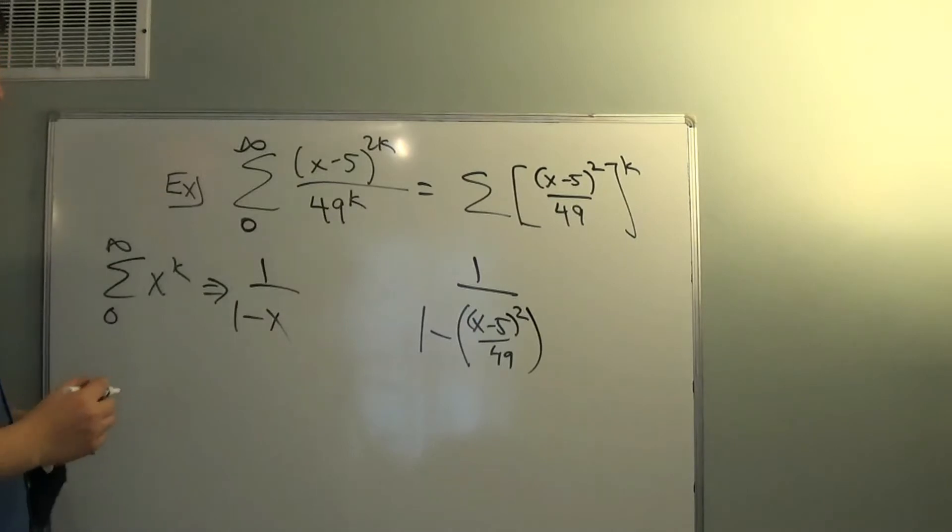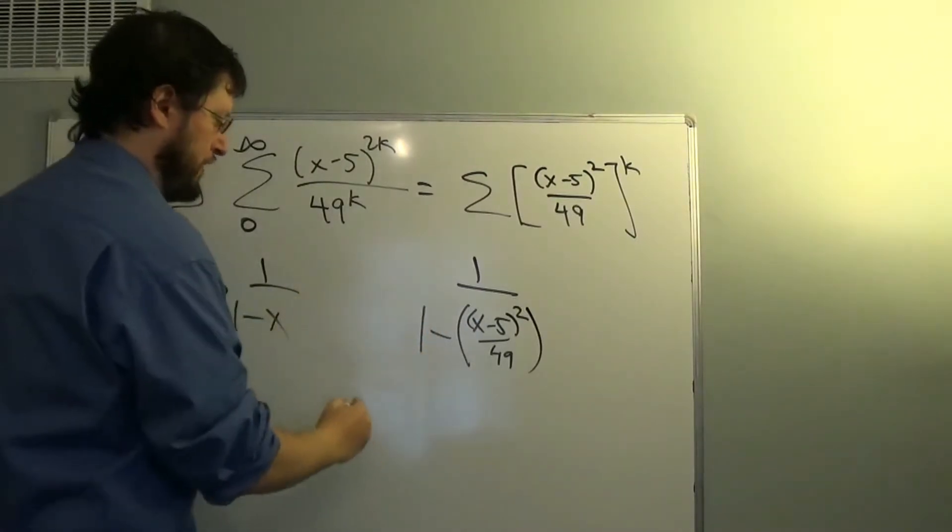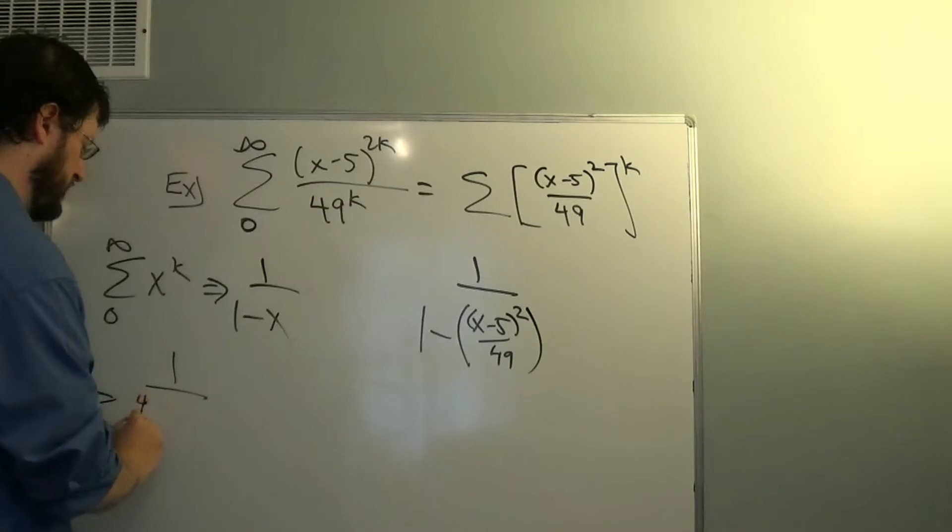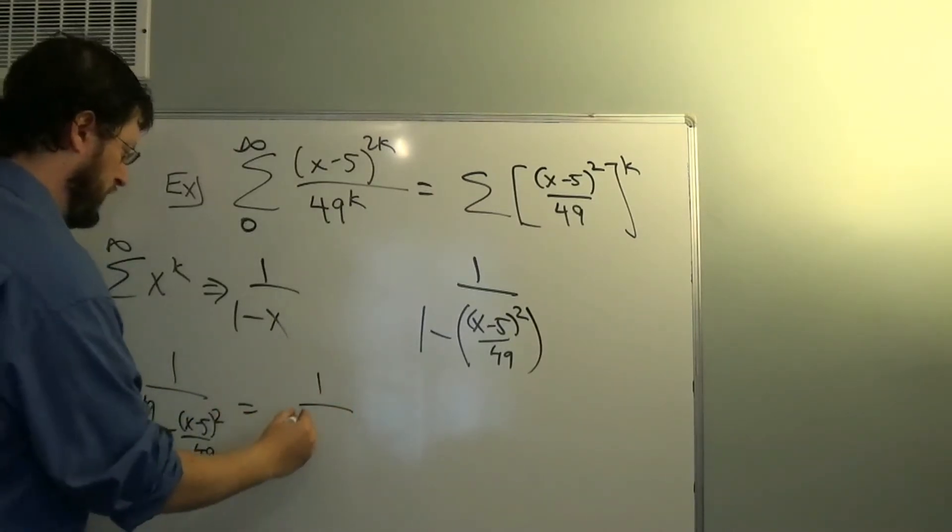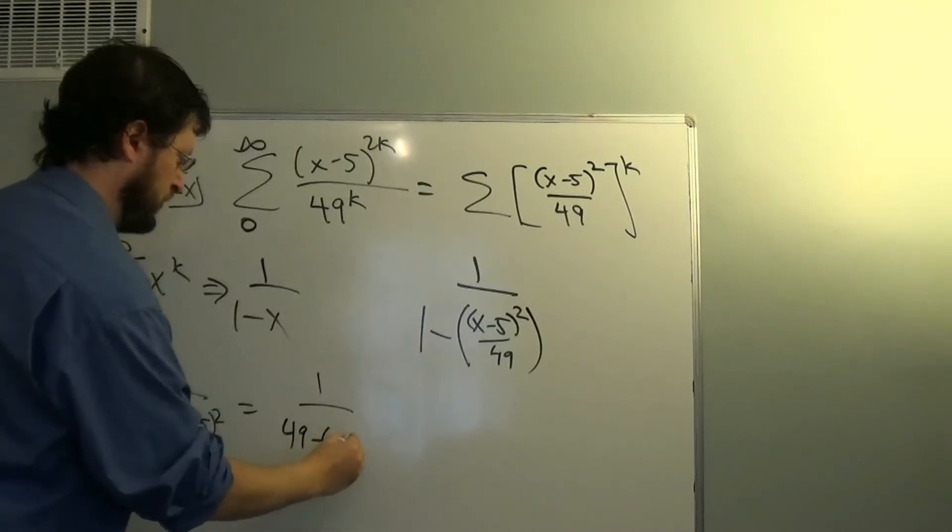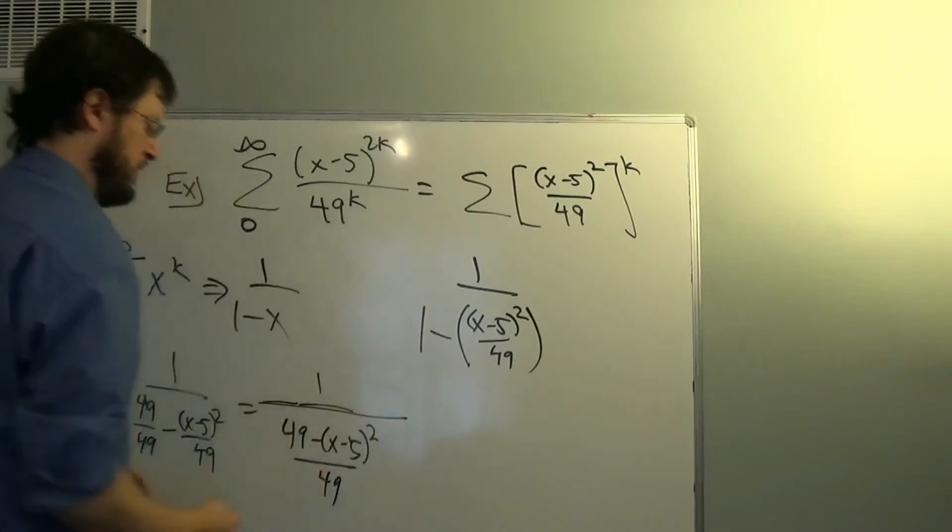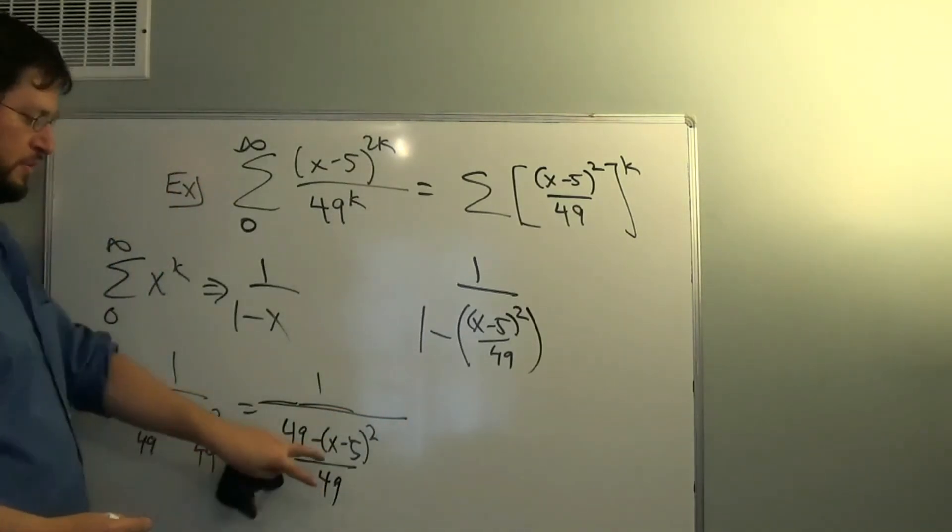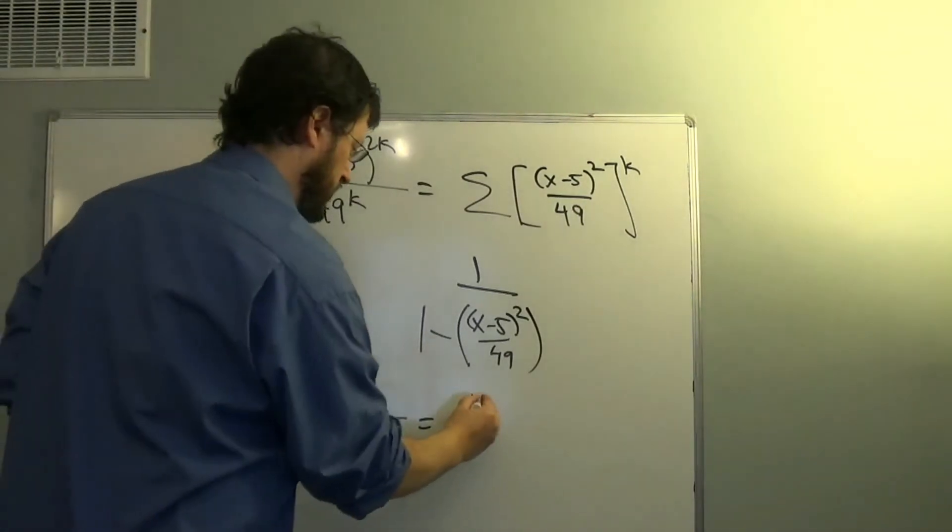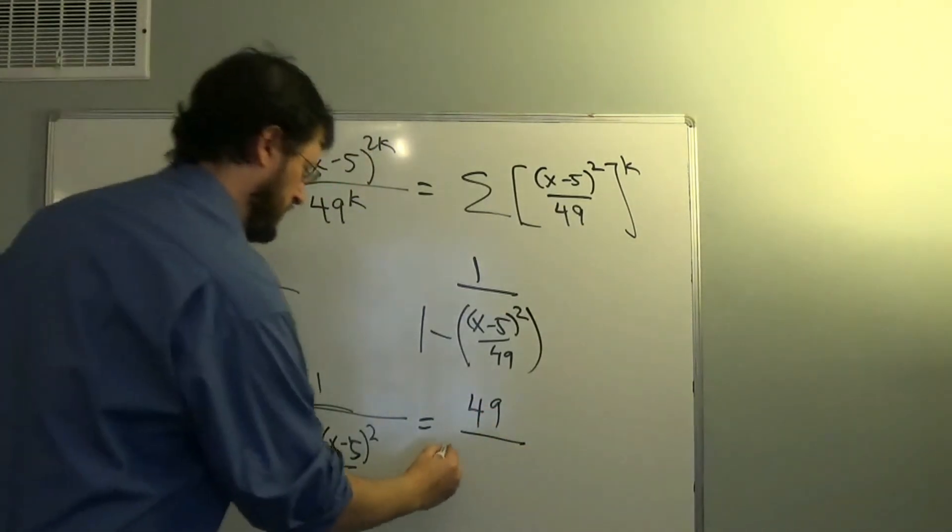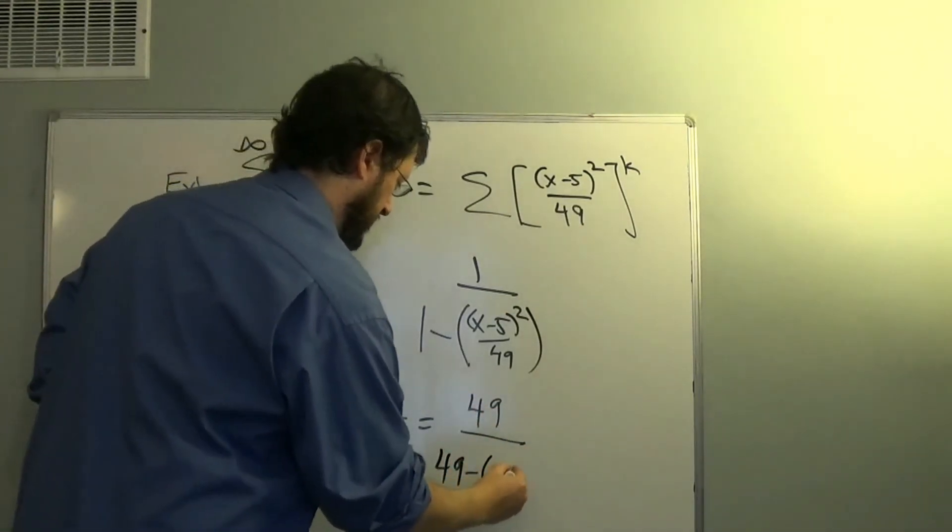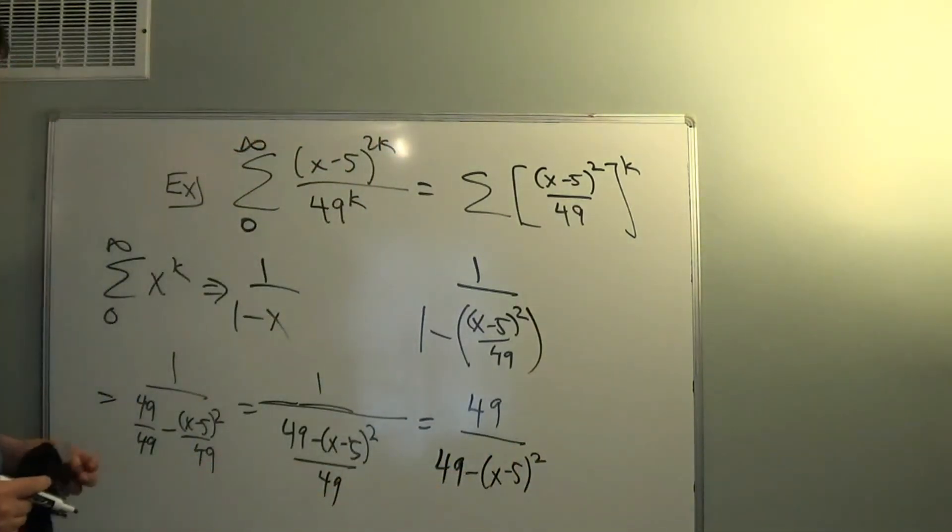We can do some algebra to make it look a little prettier. I can treat that as 49 over 49. And so that is 1 over 49 minus x minus 5 squared all over 49, which means we're really multiplying by the reciprocal. So that is 49 over 49 minus x minus 5 squared. And that's good enough.